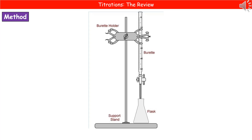What we've got here is a diagram of the equipment we've just discussed. You do need to remember the name, particularly of the burette, because that has come up in the past as a question. The big glass tube clamped onto the clamp stand is the burette, and that's where we're going to place the acid. We've got the conical flask at the bottom, and we use a clamp stand to hold the burette vertically.